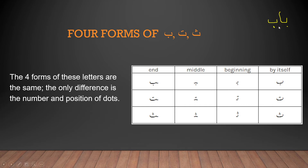In the middle form, Ba has an extension, then a line on top and another line. We can see this in examples like Yabhasu. If I write Yabhasu, we see first there is Ya, then Ba, then Ha and Sa. This middle Ba and the beginning Ba are very similar, because it's the middle version connecting with surrounding letters.